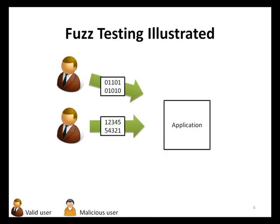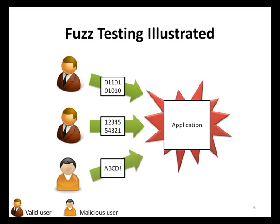An application may expect input data to contain all numerals, such as in the case of an application reading financial data or telephone numbers. Users who abide by these rules are called valid users. Fuzz testing, however, systematically simulates a user who does not abide by these rules. The specific type of user fuzz testing is employed to simulate is a malicious user.